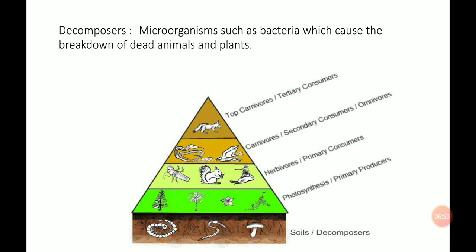Now moving to the fourth layer: carnivores or omnivores. They are also known as the secondary consumers because they are directly dependent upon the primary consumers, whether they are carnivorous or omnivorous. The last layer of the pyramid is the top carnivores, which means the tertiary consumers. They are only dependent upon animals — flesh eaters — and are known as the top carnivores or tertiary consumers.